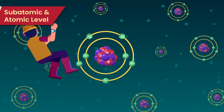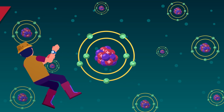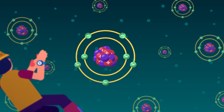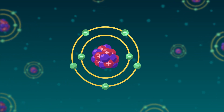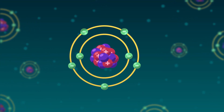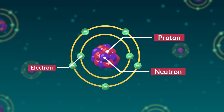Let's start from the tiniest scale of biological organization — the subatomic and atomic level. Every element on Earth is made up of atoms, each consisting of three subatomic parts: proton, neutron, and electron.